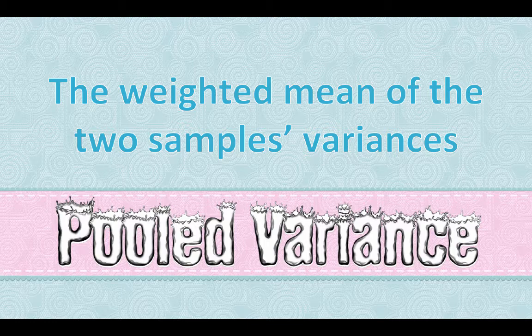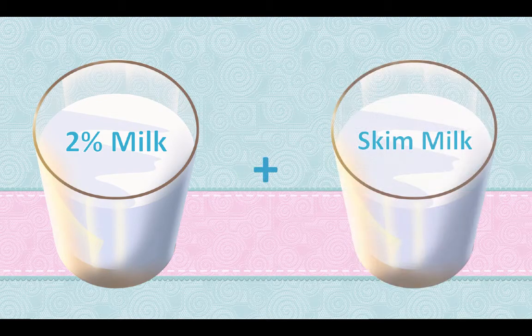Think of it like this. Imagine that you have a glass of 2% milk and a glass of skim milk, which would be 0%. If you poured them together, wouldn't you expect to have something like 1% milk? Split the difference between 0 and 2? They have different amounts of milk fat, but because the glasses are the same size, you could just average them.